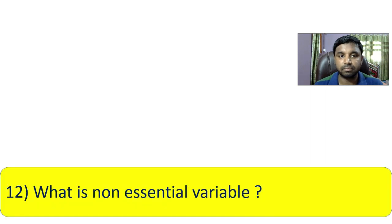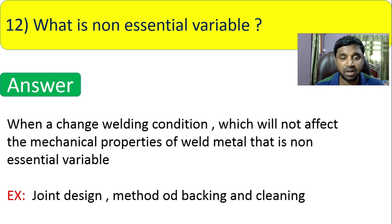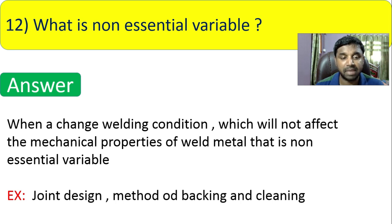Question 12: what is a non-essential variable? Non-essential variables are those that, if changed, will not affect any mechanical property of the weld. Therefore, no new WPS is required when they are changed. Examples include joint design, method of backing, and cleaning.